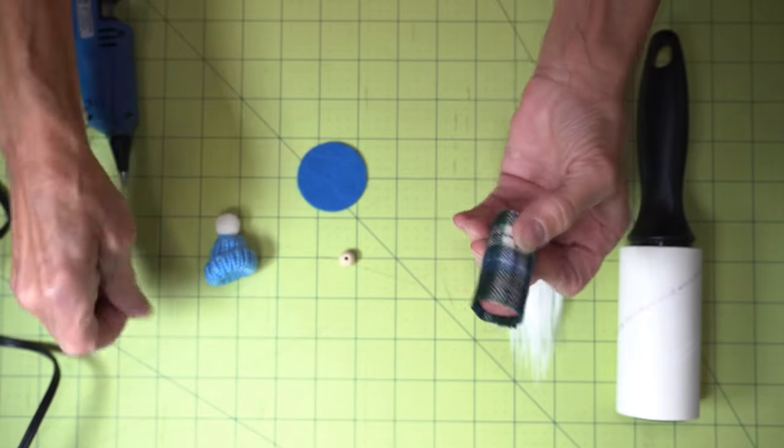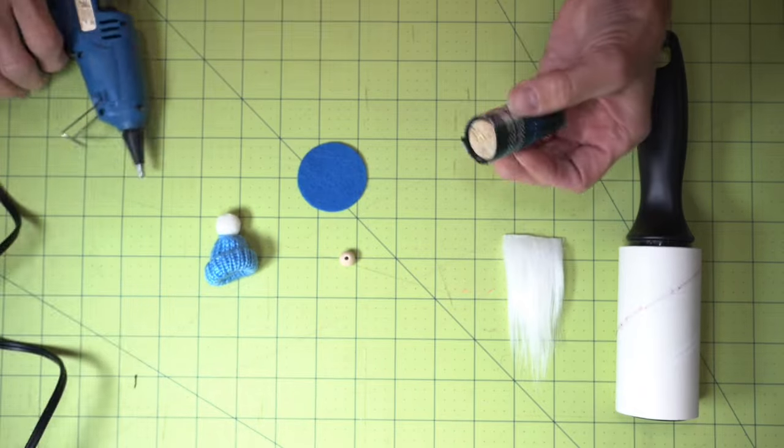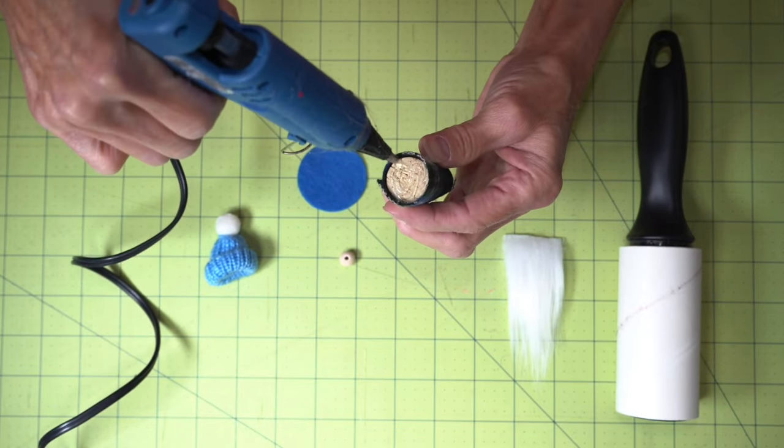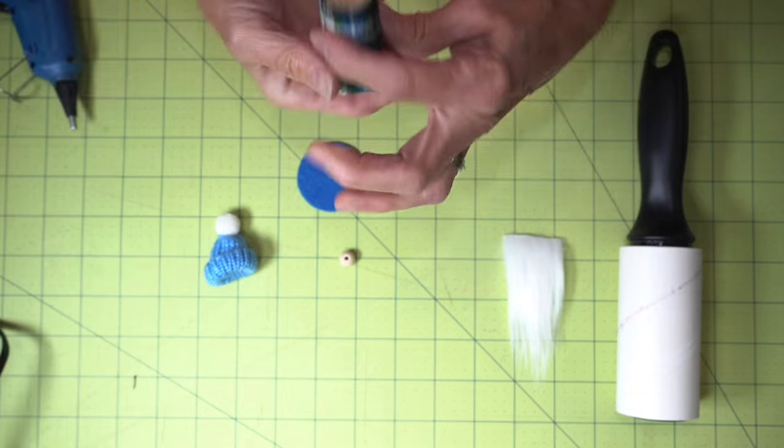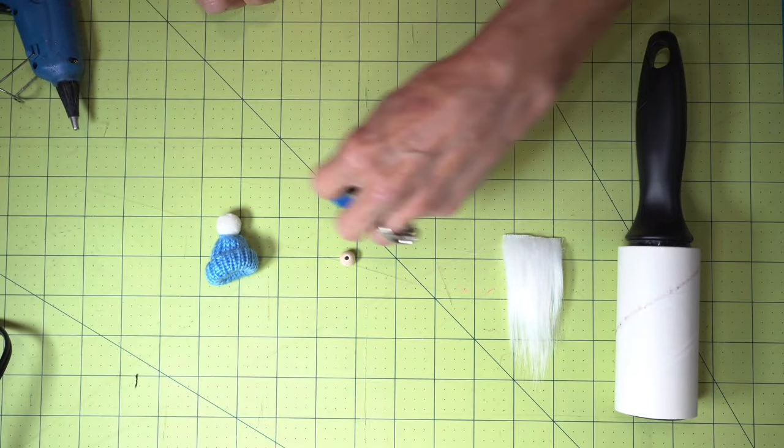All right, so that's the body of the gnome. Then I'm going to take it and I'm just going to hot glue the bottom of it right to that piece of felt. And you don't have to be precise, just stick it on the felt. Just like that.